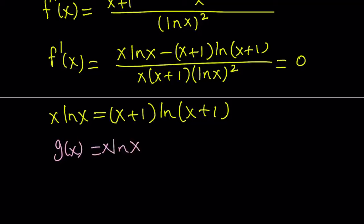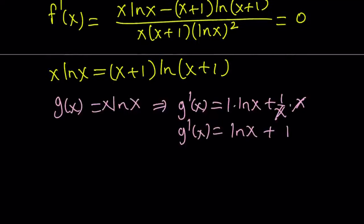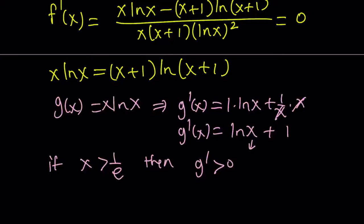Let's differentiate g. Using the product rule: g'(x) = 1·ln(x) + (1/x)·x = ln(x) + 1. Note that this is 1 + ln(x), not ln(x+1). Setting g'(x) = 0 gives the critical point x = 1/e. If x > 1/e, then g' is positive, which means g is increasing. Our x values of 10 and 11 are definitely greater than 1/e, so g is always increasing on our interval.